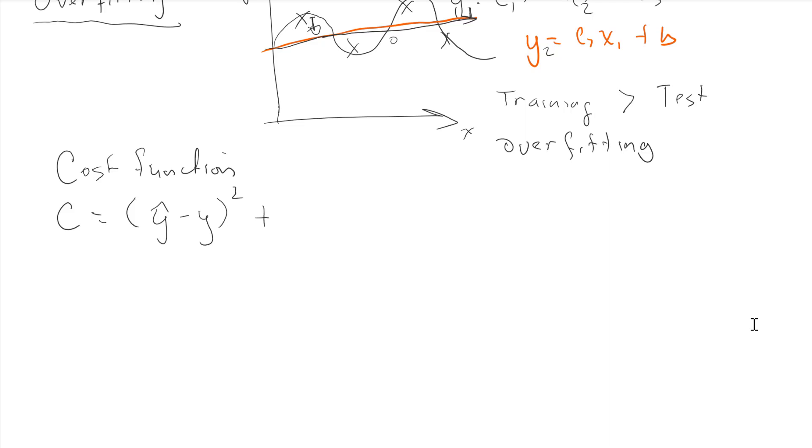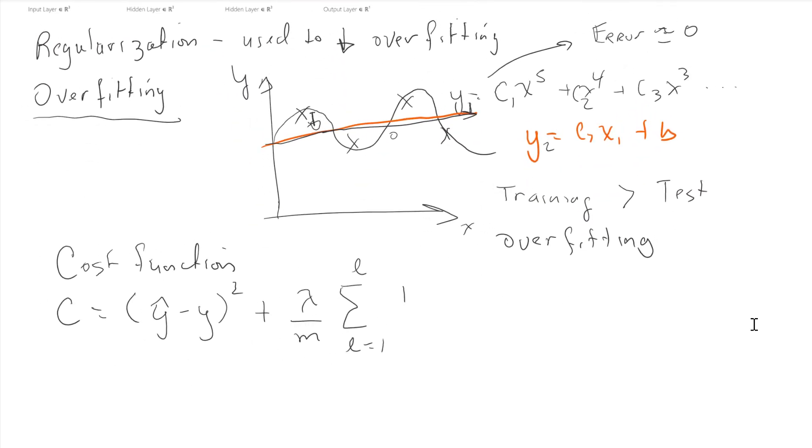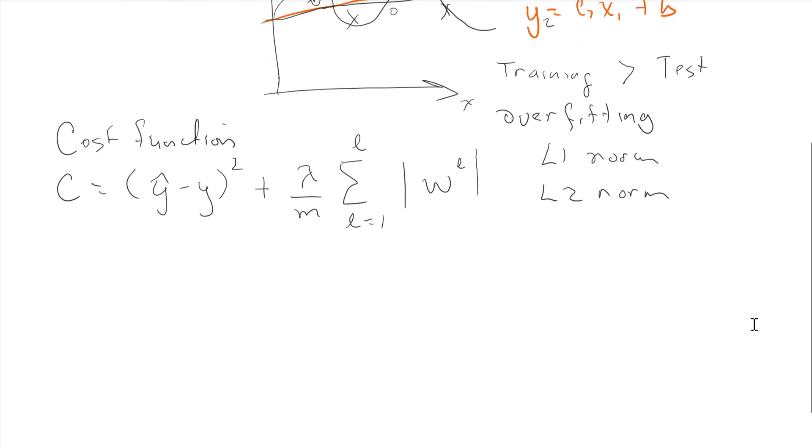With regularization, you add something to the cost function. Lambda over m, where m is the number of nodes in the network. Then you sum over l = 1 to L, where L is the number of layers. We take the absolute value of the weights in every layer. This is called the L1 norm. You can also do an L2 norm, which is the square, but today we're talking about the L1 norm conceptually.